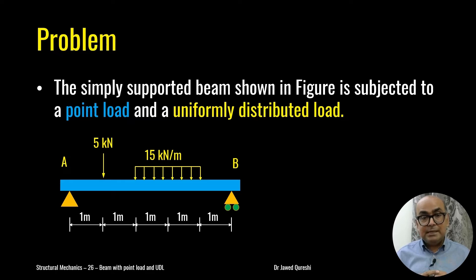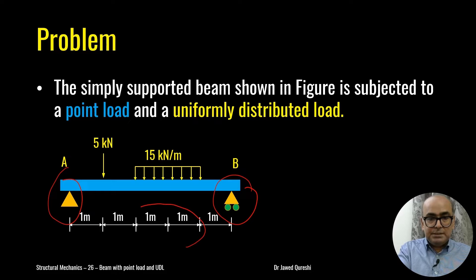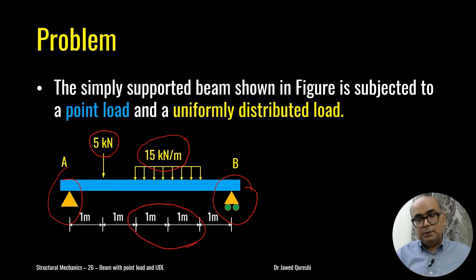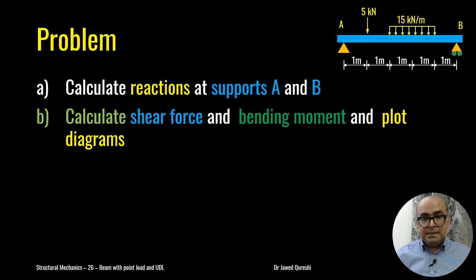This is the example I want to solve today. It is a simply supported beam — support A is a pin support, support B is a roller support — and a uniformly distributed load of 15 kN/m is spread over a two-meter portion of the beam, and a point load of 5 kN is applied at a specific location.